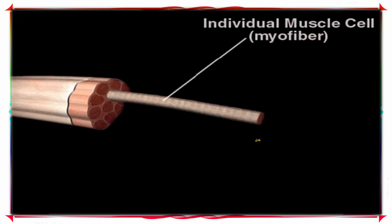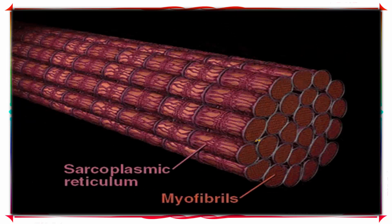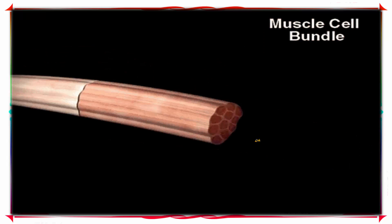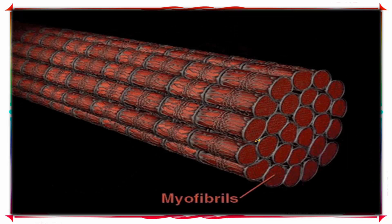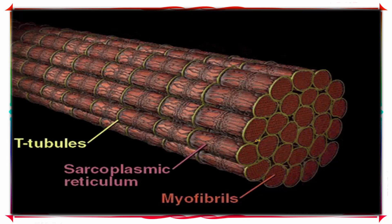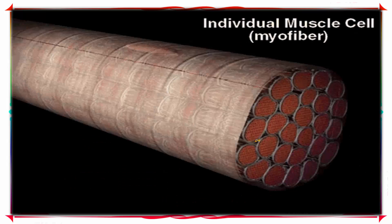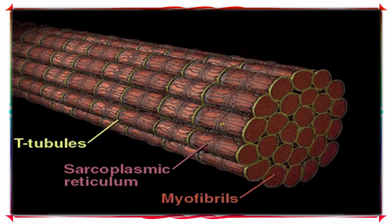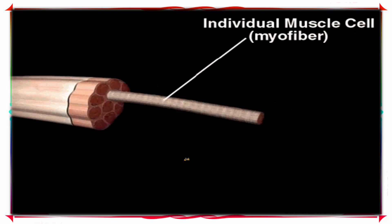An individual muscle strand is formed by a muscle bundle which has a fascicle, and the fascicles are made up of myofibrils, where your myofibrils are made up of thick and thin filaments.